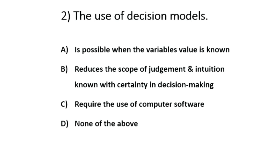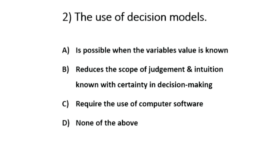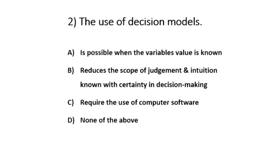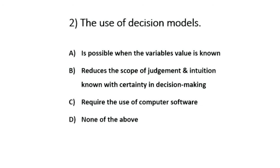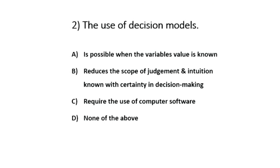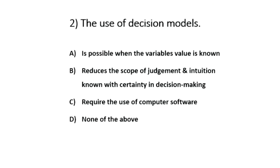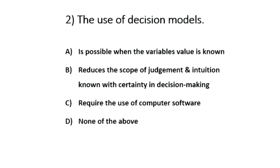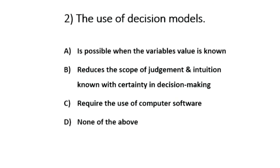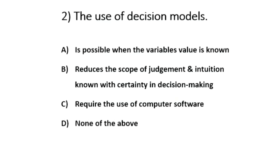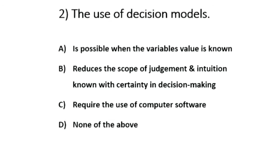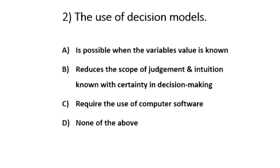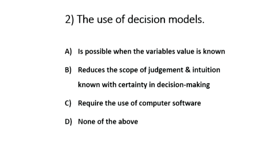Question number 2. The use of decision models — the options are: option A, is possible when the variable value is known; option B, reduces the scope of judgment and intuition known with certainty in decision making; option C, requires the use of computer software; option D, none of the above.